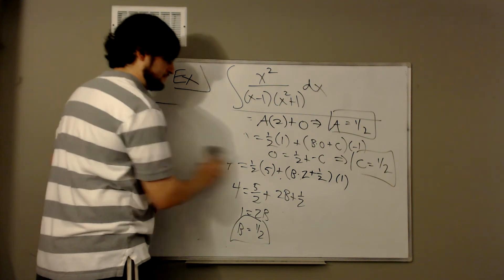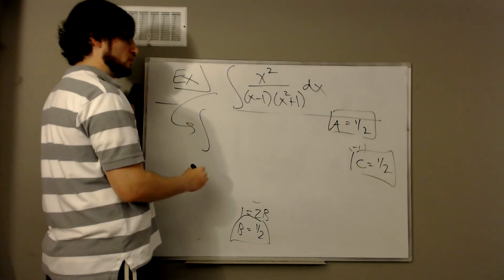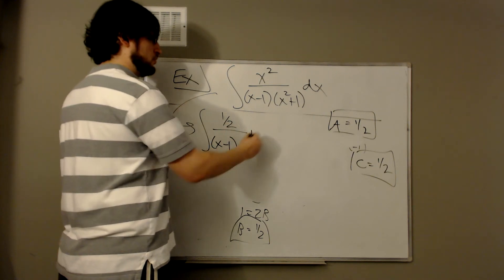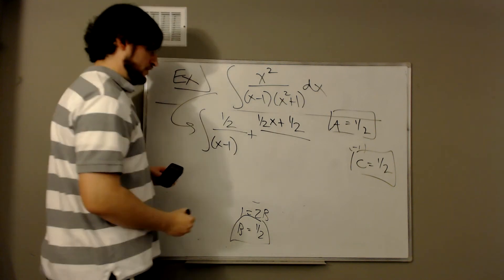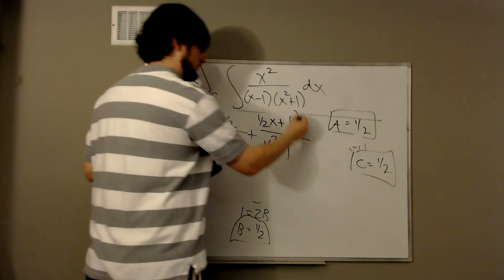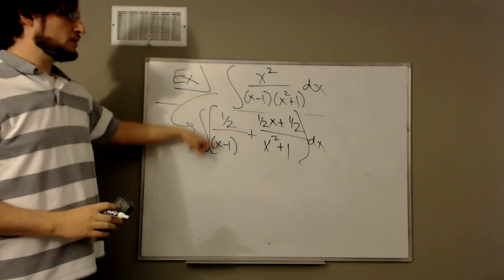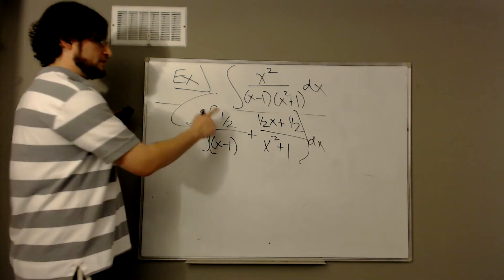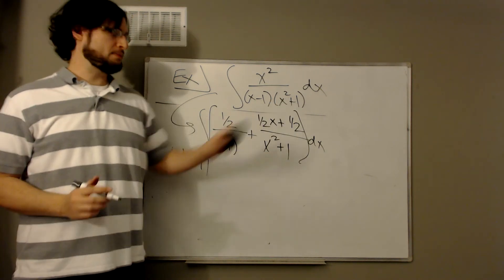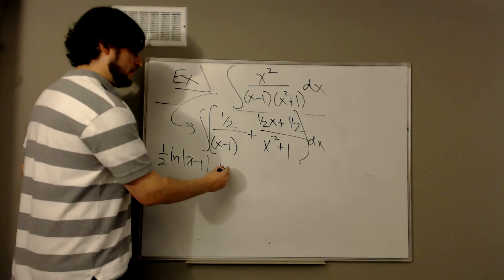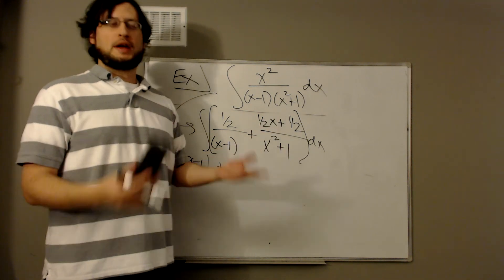Now we can set up the integration. The integrand becomes a over x minus 1, which is 1 half over x minus 1, plus bx plus c over x squared plus 1, which is 1 half x plus 1 half over x squared plus 1. The first piece is straightforward: it integrates to 1 half ln|x minus 1|.